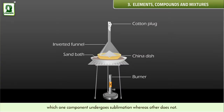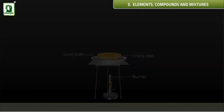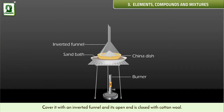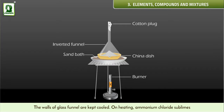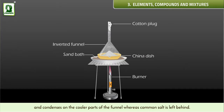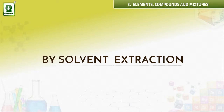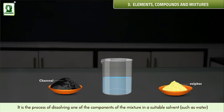Sublimation: this method is used for the separation of the components of a mixture in which one component undergoes sublimation whereas the other does not. For example, take a mixture of ammonium chloride and common salt in a china dish, cover it with an inverted funnel whose open end is closed with cotton wool. On heating, ammonium chloride sublimes and condenses on the cooler parts of the funnel whereas common salt is left behind. The fine powder of ammonium chloride deposited on the funnel is scraped off with the help of a knife.